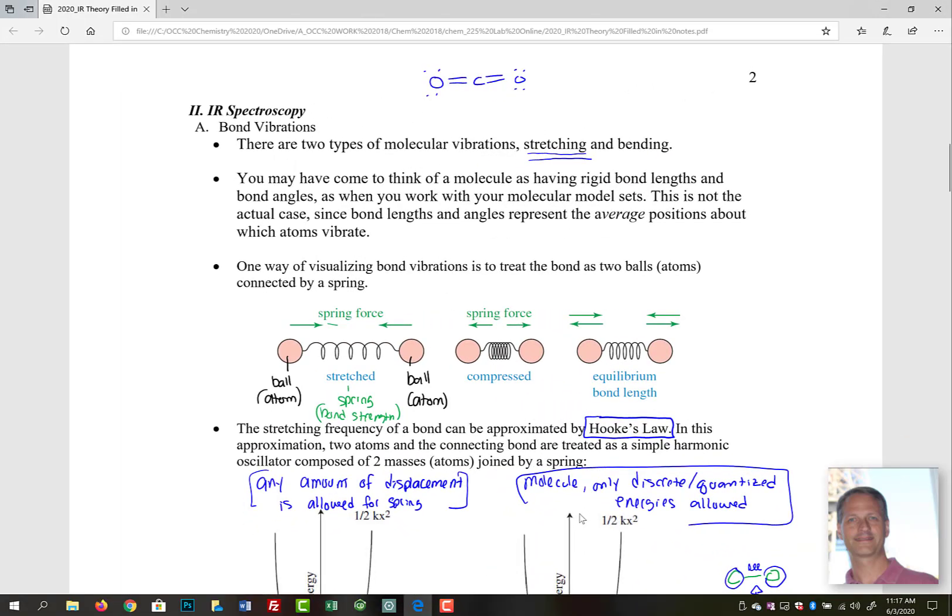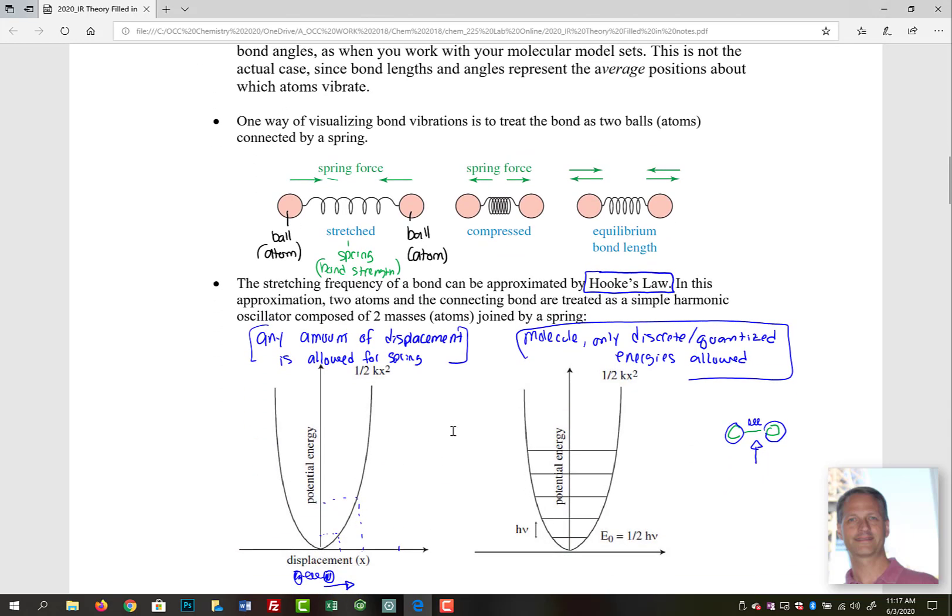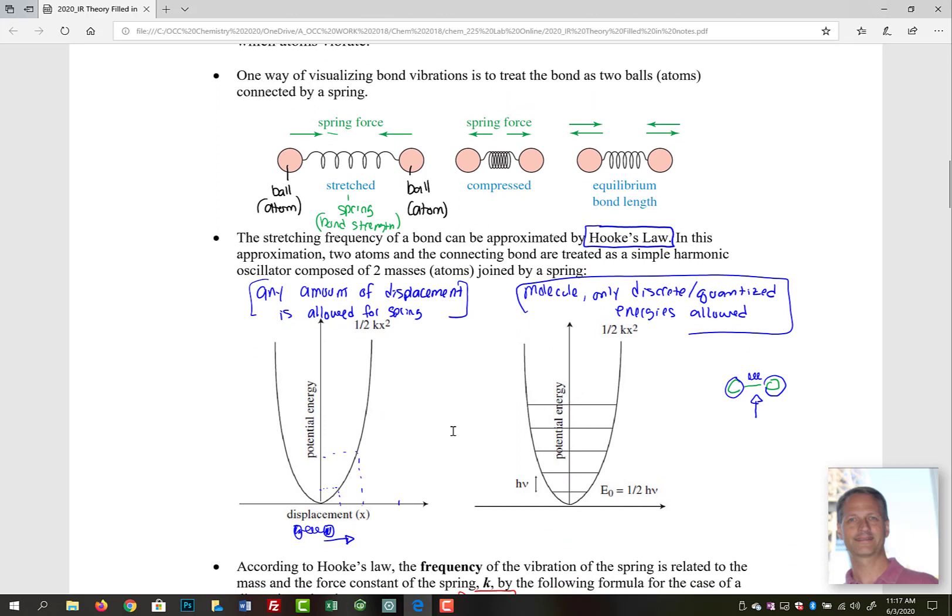In IR spectroscopy, we have different types of bond vibrations. There are two basic types: stretching and bending. You may have come to think of molecules as having rigid bond lengths and bond angles, especially when you work with your molecular model sets. But it's not the actual case, since bond lengths and angles represent average positions about which atoms vibrate. Those bonds themselves can actually move.